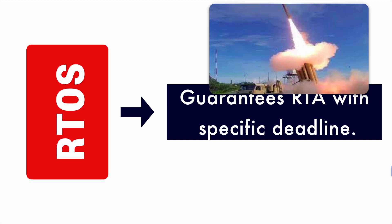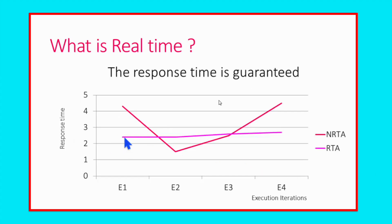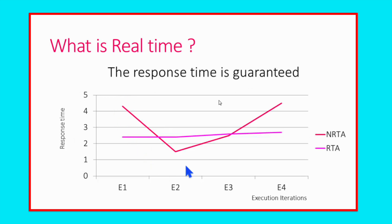Those kinds of services are given by the real-time operating system, and the response time is always constant. You can see here this line shows the response time for a real-time application. Take the example of the airbag system of the car — upon detection of an accident, the airbag has to come up within a certain deadline, so its response time must be constant. In a non-real-time application, response time can vary — sometimes it can take longer and sometimes it can respond very fast.